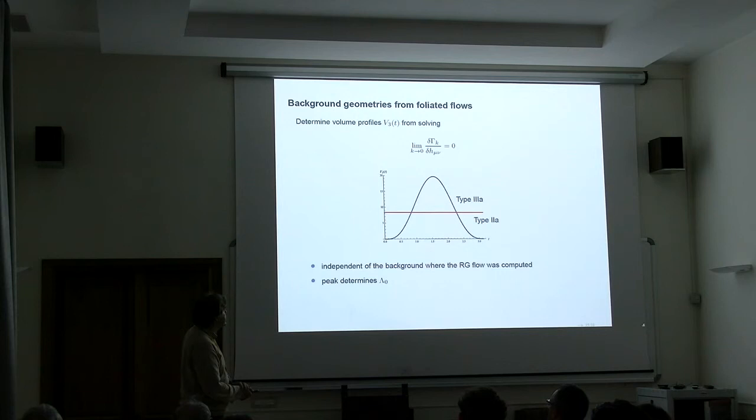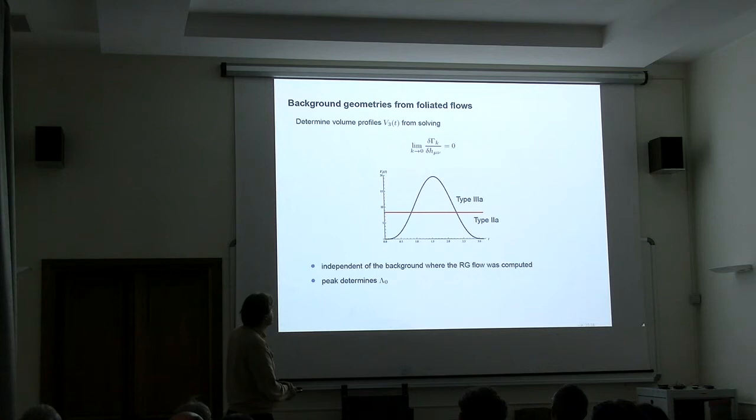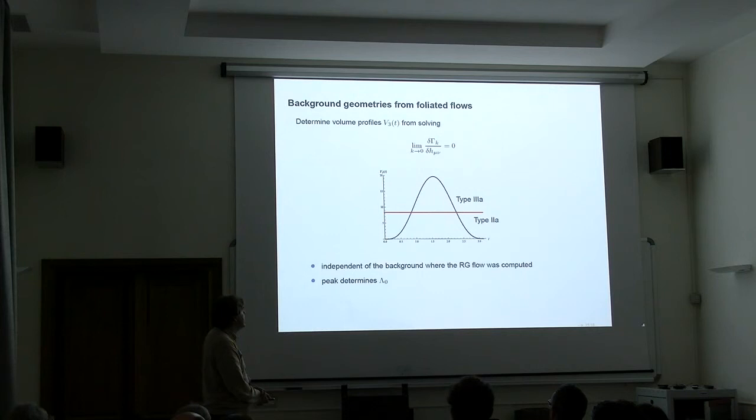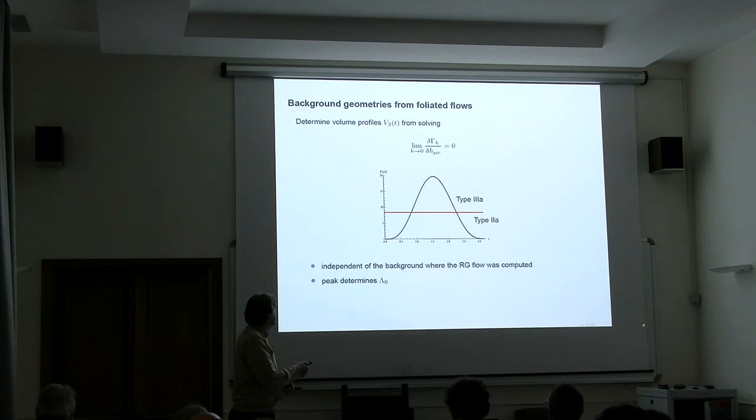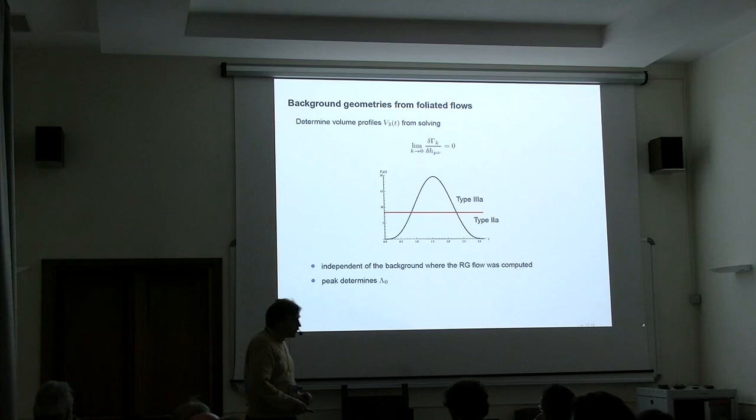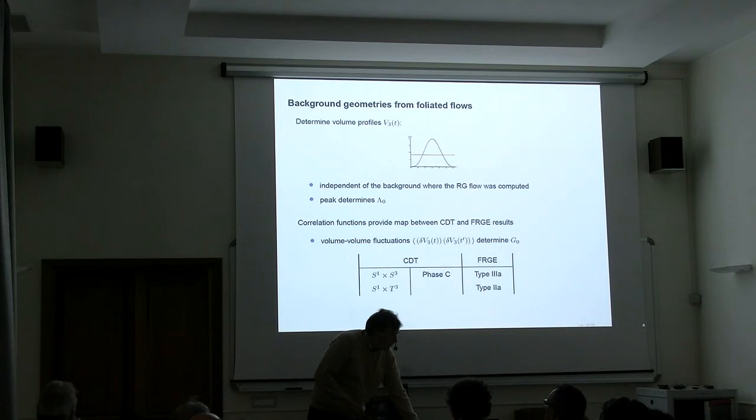Then you can do this for endpoints of two different sets of trajectories. We had the trajectories which had a positive cosmological constant. Here we recover precisely the corresponding volume profile that we had in the CDT phase C. And if we construct the solutions for a type 2A trajectory, we get precisely the straight line that has also been recovered in CDT. In this way, we understand how these profiles arise in terms of the flow equation. We can use information on this peak structure to actually tell where we are in phase space. And also I should stress that this one doesn't have any knowledge about the background where the RG flow was computed. This works quite generally.